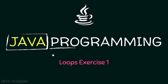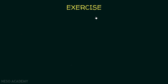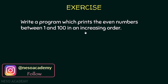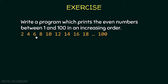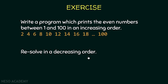Hello friends and welcome back. In this lecture we're going to solve an exercise on loops. The exercise: write a program which prints the even numbers between 1 and 100 in increasing order, so the output would be 2, 4, 6, up until 100. After finishing, resolve it in decreasing order, so the output would start at 100 and end at 2.